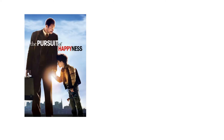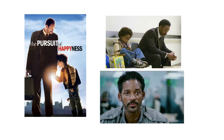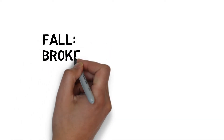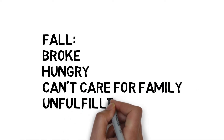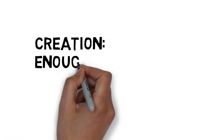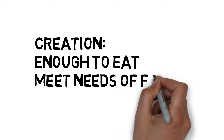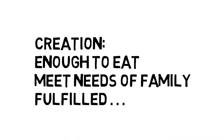For example, in the movie The Pursuit of Happyness, starring Will Smith, the fall is really easy to find. Our hero is broke, he's hungry, he's desperately trying to take care of his family, and he's not fulfilled at all. If we identify those elements of the problem — which is the fall — we can just find the opposites, and this gives us a definition of creation. If he's broke, creation would be having his needs met. If he's hungry, creation would be having enough to eat. If he's trying to take care of his family, creation would be the ability to meet the needs of your family. If he's not creatively fulfilled, creation would be the ability to express himself in creative ways.